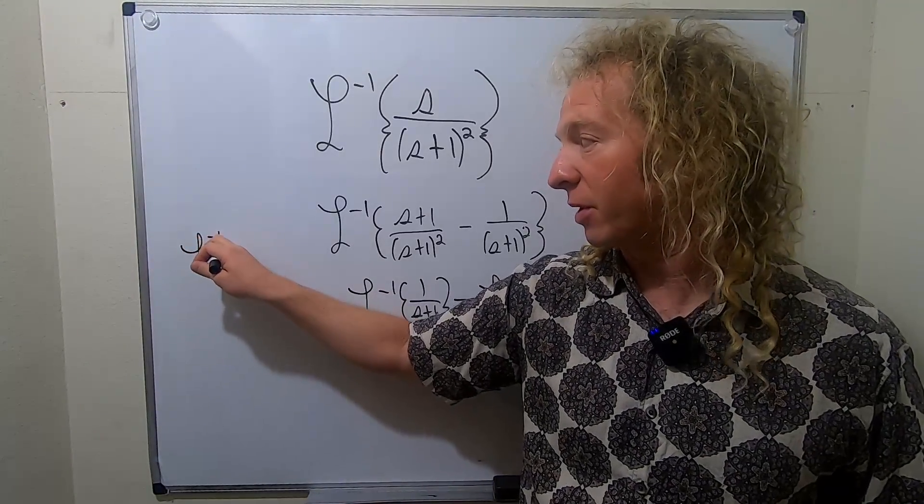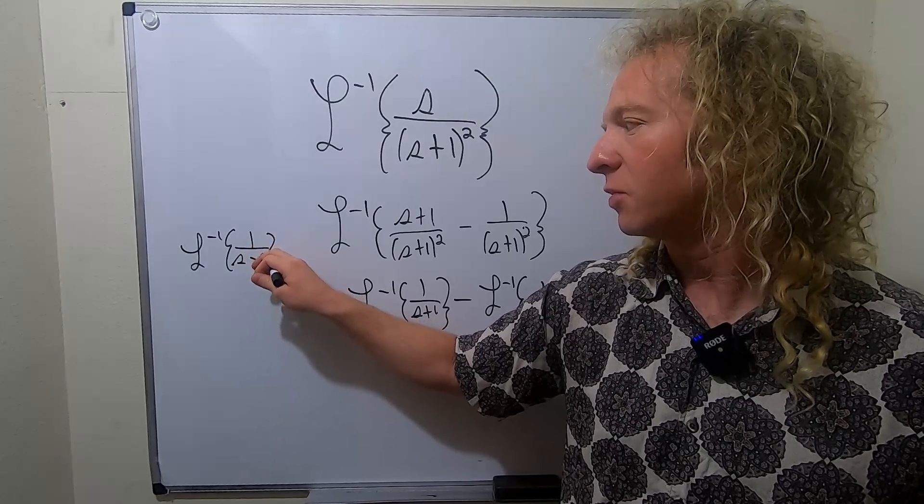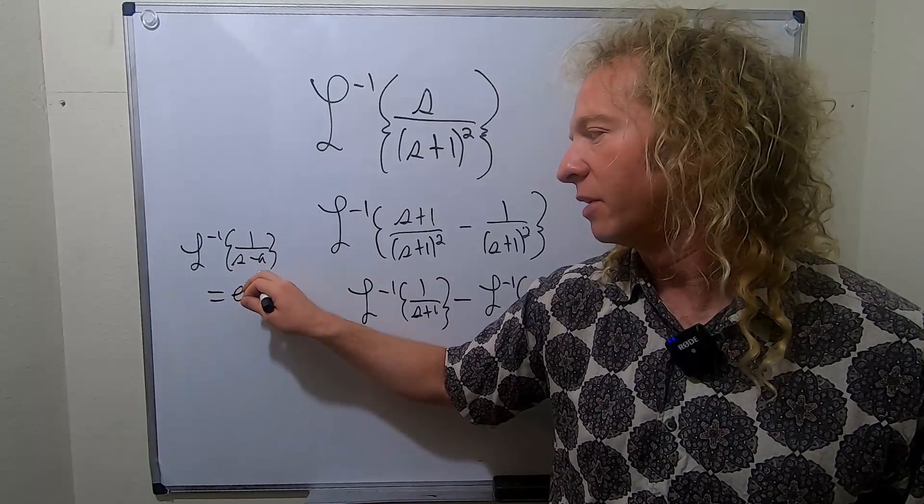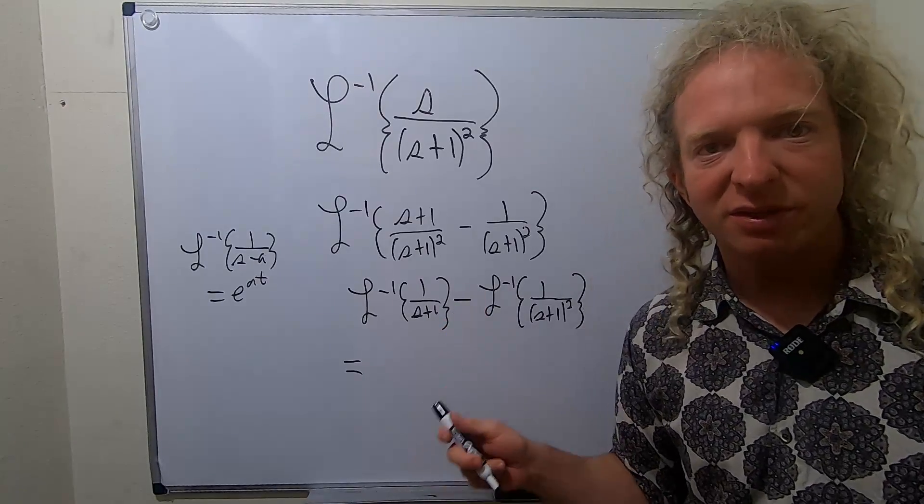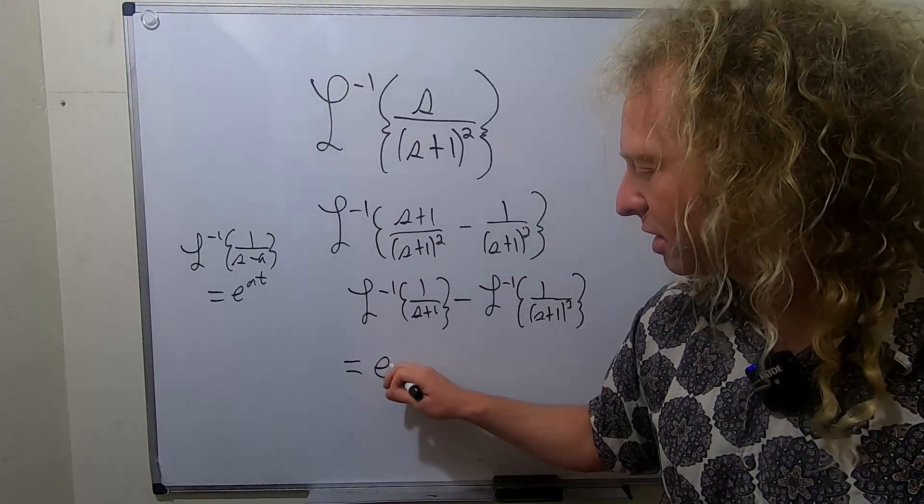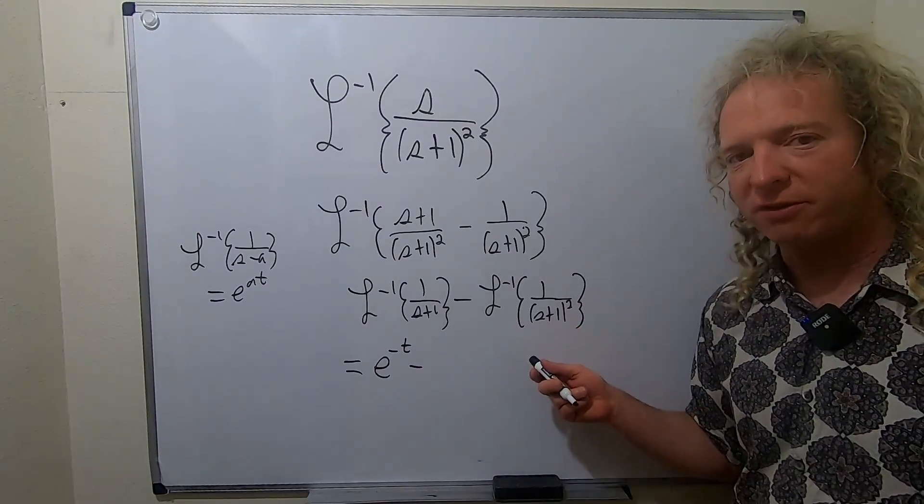So that's what we'll do in this case. Here it's s minus negative one because it's a plus, so it'll be e^(-t) minus... Here we're going to perform a shift just so we can do the problem. This is the inverse Laplace, so we don't have a formula for 1/(s+1)².